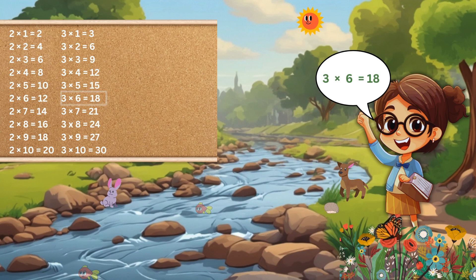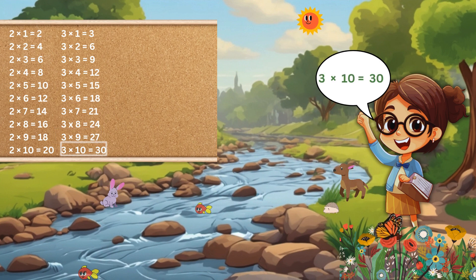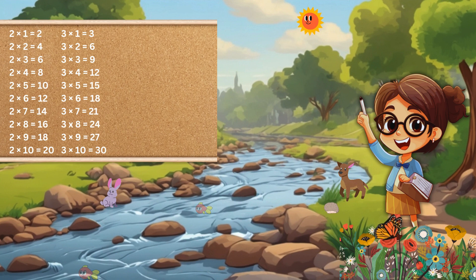3 6s are 18, 3 7s are 21, 3 8s are 24, 3 9s are 27, 3 10s are 30. Now let's learn table of 4.